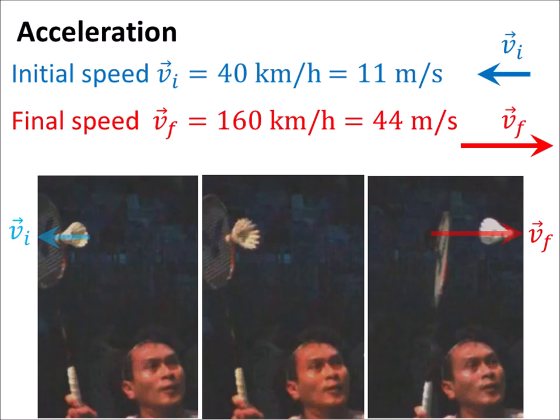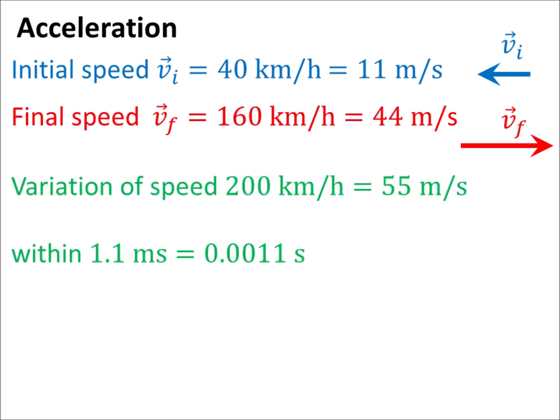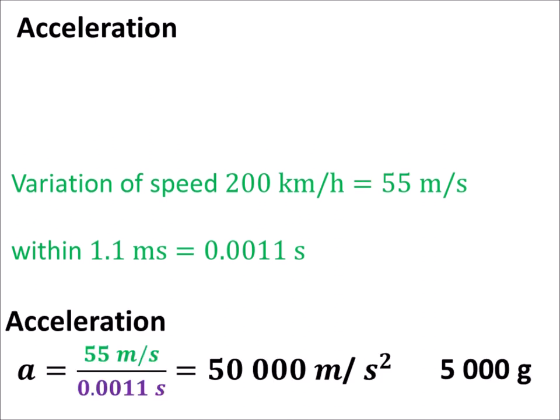Here, the initial speed is about 40 km per hour, and the final speed is about 160 km per hour. So the speed variation is on the order of 200 km per hour, which occurs within 1.1 ms, and it corresponds to a huge acceleration of 5000 g.